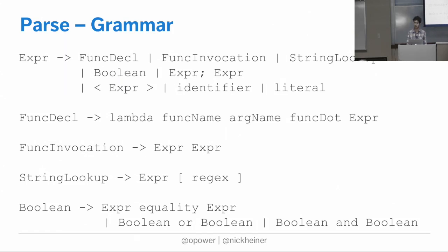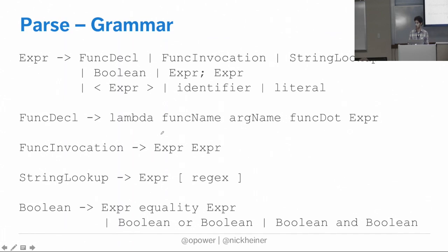This is our grammar for LambdaScript, and as promised it does all fit on one slide. What lets us generate an infinite set of programs from this is its recursive nature. The left-hand side is a node in the tree, and its children are on the right-hand side. The pipe means alternation - so a Boolean can be an expression, an equality symbol, and an expression, or it can be a Boolean-or-Boolean or Boolean-and-Boolean. Because it's recursive, we can generate arbitrarily complicated structures. An expression can be a function declaration, and a function declaration contains an expression.